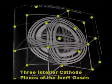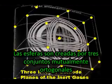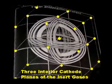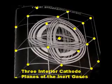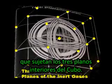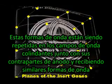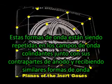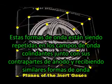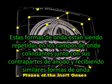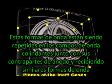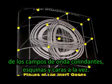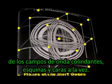The spheres are created by the three mutually orthogonal sets of inert gas rings, which bound the three interior planes of the cube. These waveforms are being repeated in the neighboring wavefields along with their anode counterparts and receiving similar waveforms from the neighboring wavefields, corners, and faces at the same time.